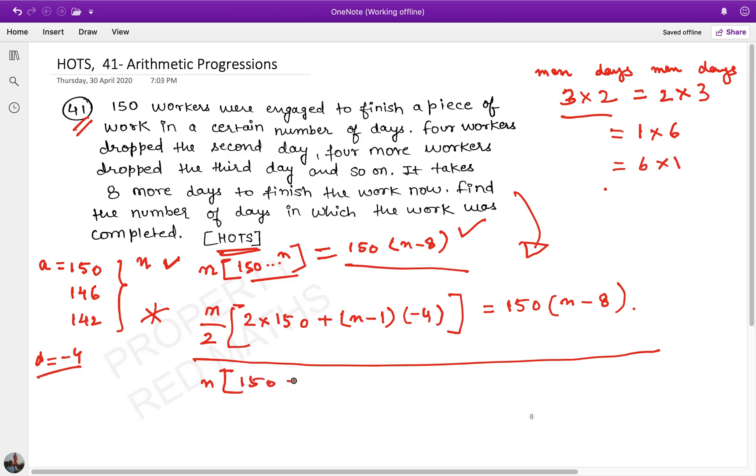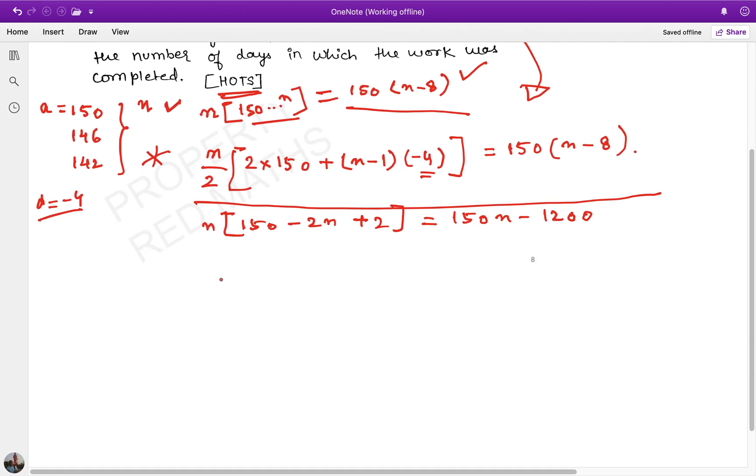If I take out n and divide by 2, I get n into (150 minus 2n). Because when I multiply n, I get 2 times 150 which is 300, minus 2n, and minus 2 into minus 1 gives plus 2. This equals 150n minus 1200. So we have n/2 times (152 minus 2n) equals 150n minus 1200. Simplifying: minus 2n² plus 152n equals 300n minus 2400. This becomes 2n² minus 2n minus 1200 equals 0.